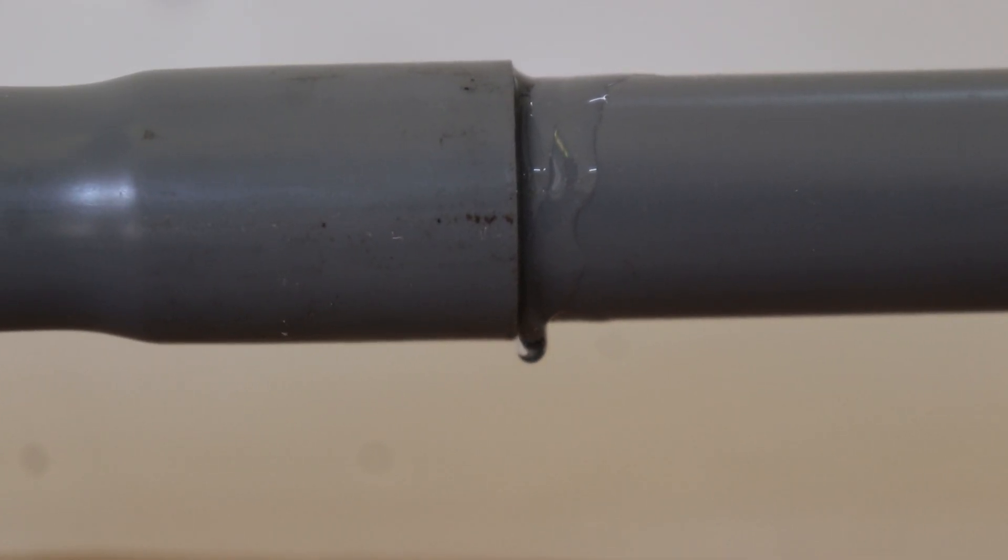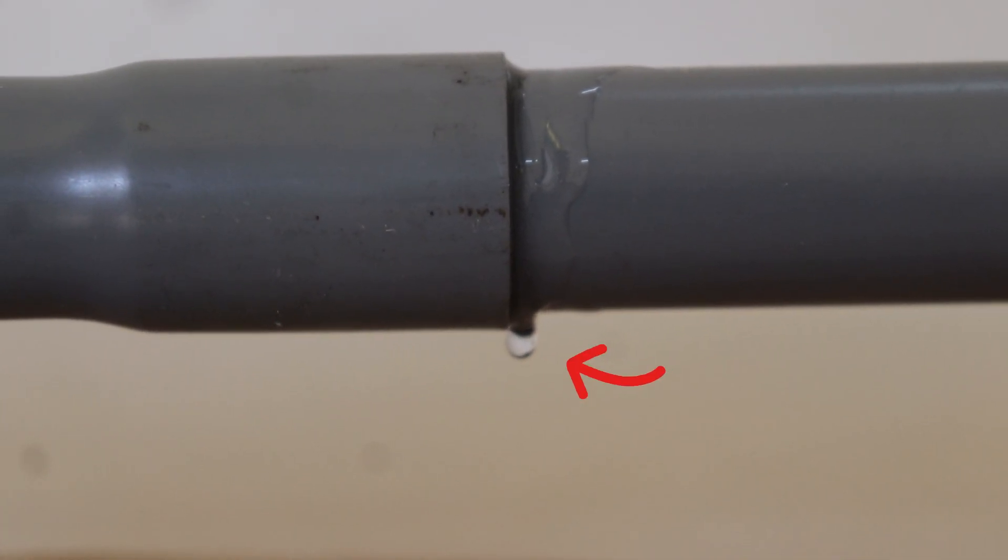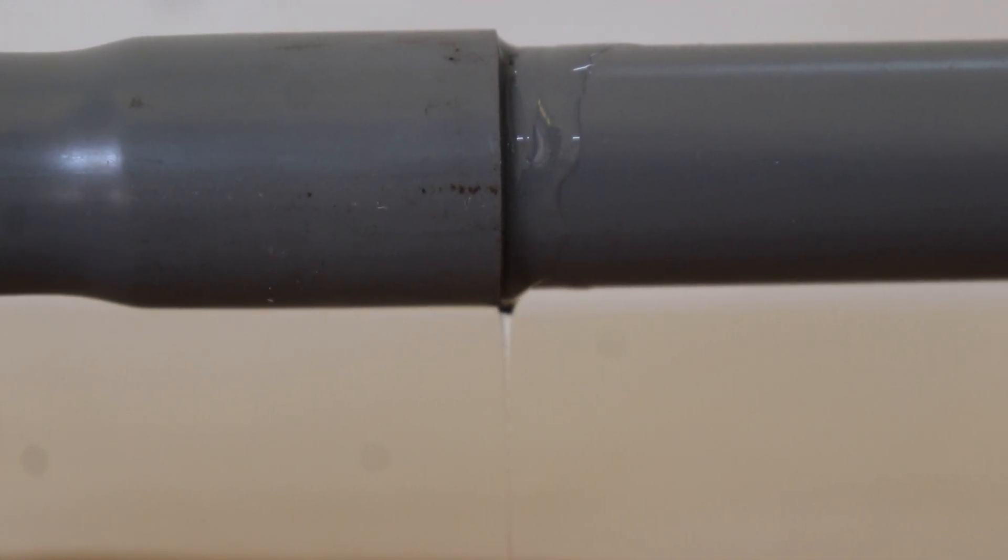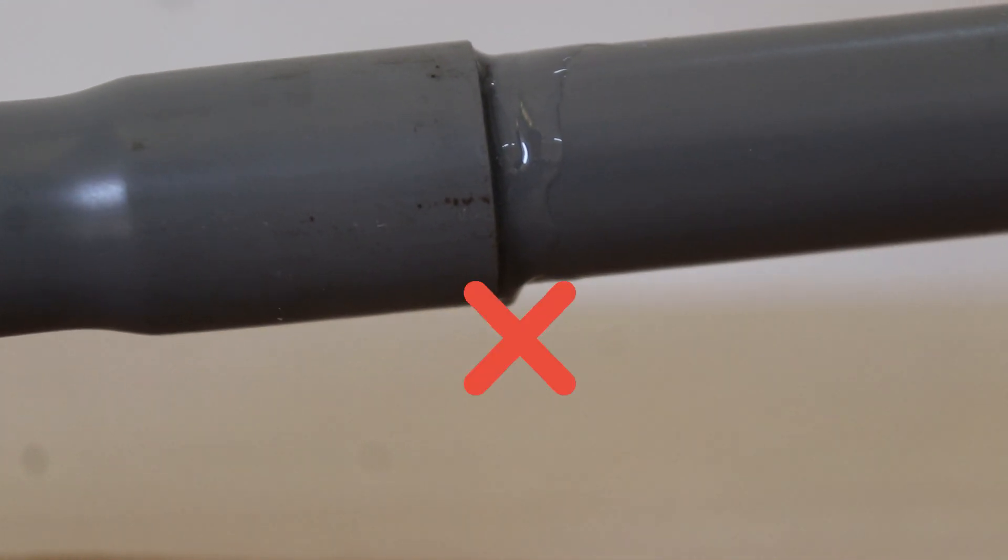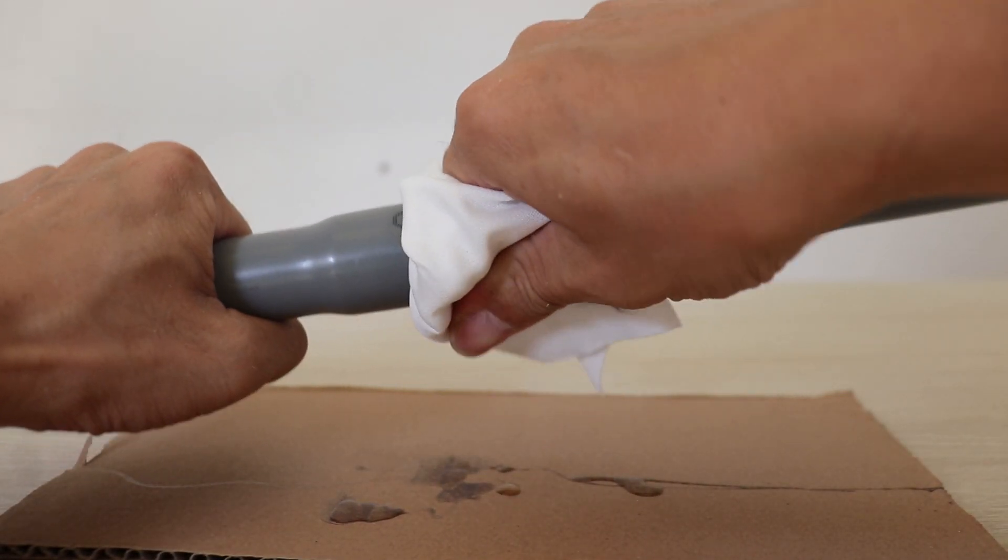Sixth, clean the glue after the connection is complete. The excess glue flowing can prolong the completion time of the connection and can melt the PVC pipe.